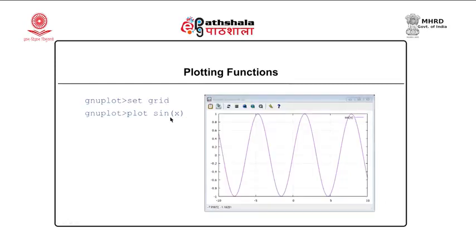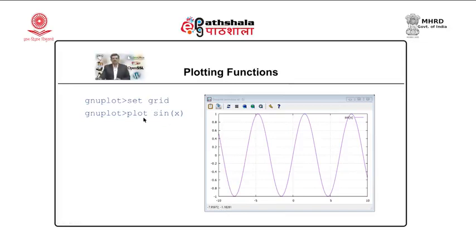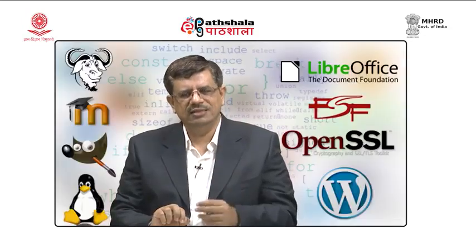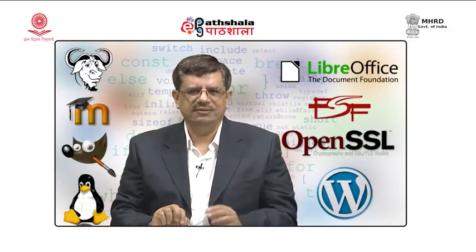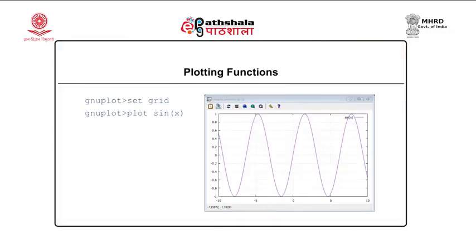In this example, I have enabled the grid option. When I say 'set grid', it shows the grid in the background — you can see the dotted square lines as the background. After enabling the grid, I issue the command 'plot sin(x)' and the sine curve is represented with the grid in the background. We can also disable the grid, or use the menu option to set or unset grid.